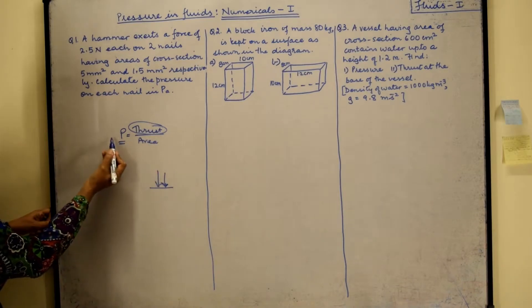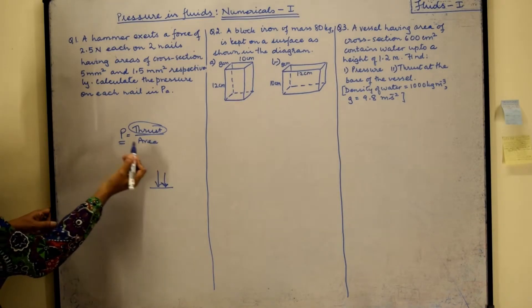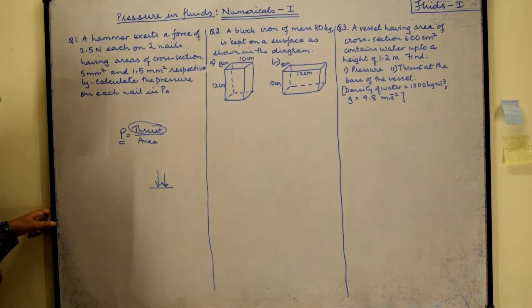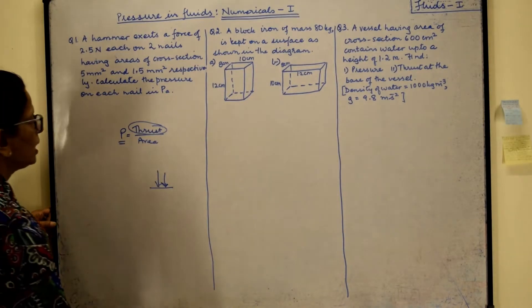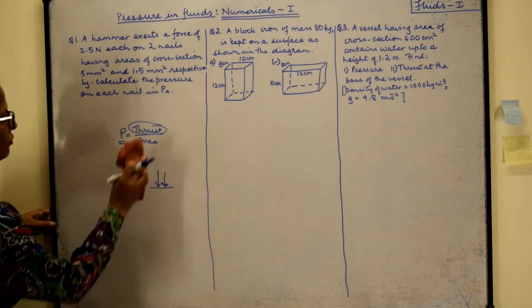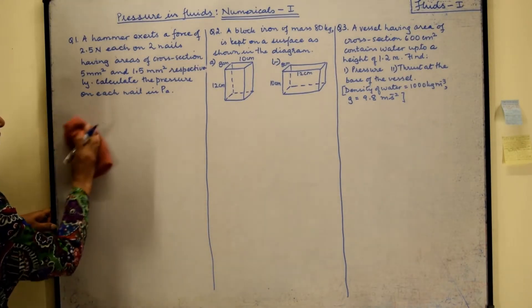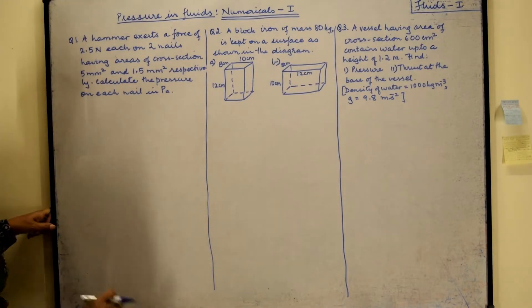More the area, less will be the pressure, and less the area, more will be the pressure. So we are going to use the formula: pressure equals thrust upon area.